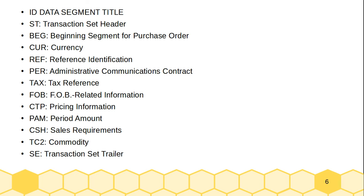There are also key segment types used within X12 transactions: BEG for the beginning of a purchase order segment, CUR for currency, REF for reference identification, PER for administrative communication contact, TAX for tax reference, FOB for FOB-related information, CTP for pricing information, AMT for period amount, CSH for sales requirements, TC2 for community, and SE for the transaction set trailer.